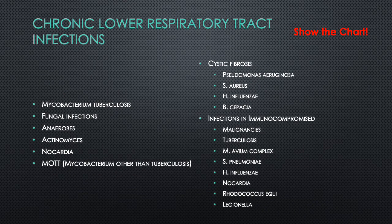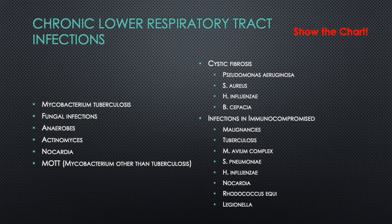An additional category is chronic lower respiratory tract infections, associated with patients who have pre-existing conditions such as cystic fibrosis or immunocompromised states. Usual suspects include Mycobacterium tuberculosis, fungal infections, anaerobes, Actinomyces, Nocardia, and non-tuberculous mycobacteria. In cystic fibrosis patients, common pathogens are Pseudomonas aeruginosa, Staph aureus, Haemophilus influenzae, mycobacteria, and Aspergillus. In immunocompromised patients we see tuberculosis, Mycobacterium avium, Strep pneumoniae, Haemophilus influenzae, Nocardia, Rhodococcus, and Legionella.